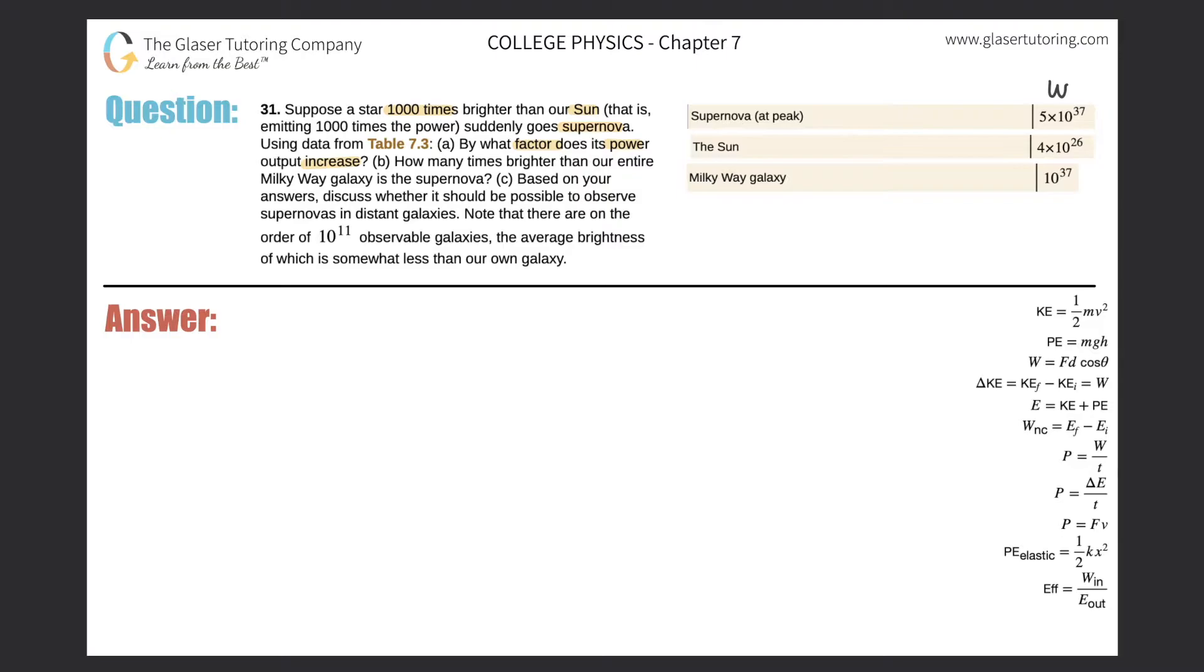Well, they're talking about a sun that is 1,000 times brighter than ours, meaning that it has 1,000 times more power. So our sun produces a power of about 4 times 10 to the 26 watts. So first thing is,